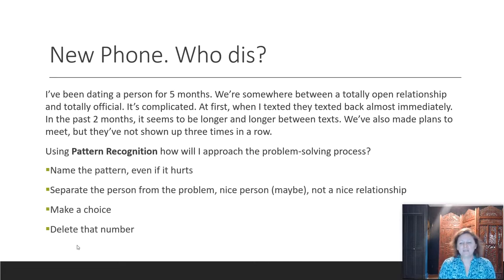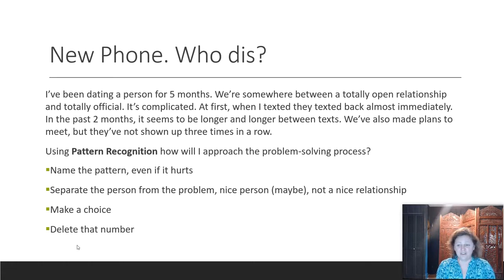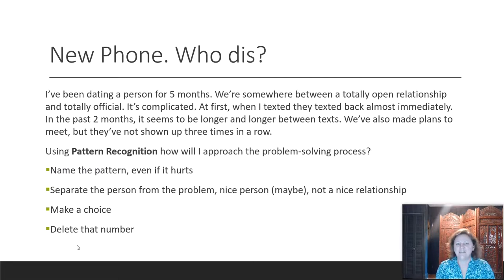First, we need to name the pattern. So what is the pattern? Well, whoever it is that you're kind of dating, the pattern is they're not reliable and they're not demonstrating interest. And if that hurts your feelings, I'm really sorry — you can cry about it later or write about it in your journal or talk to me. I'd love to counsel you through that. But the truth is, that's life sometimes.